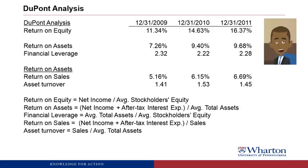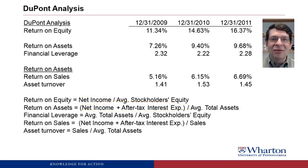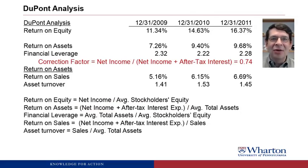ROE equals ROA times financial leverage — but in 2011, 9.68 times 2.28 is 22.1, not 16.4. This is actually a simplification, not a mistake. The return in ROE is net income, while the return in ROA is delevered net income — we add back the after-tax interest expense. Because we're using different returns, they won't multiply together exactly. To get it to work, you'd have to put in a third correction factor: net income divided by delevered net income. If you include that factor, then everything would multiply together correctly.